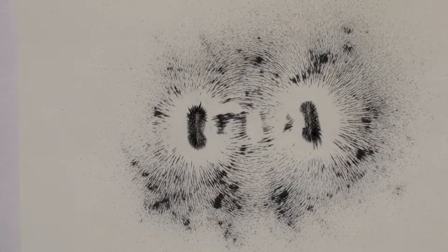Within magnetic materials, atoms exist in small groups which we call domains. Within these domains, all of the atoms spin in the same direction, creating a small magnetic field.